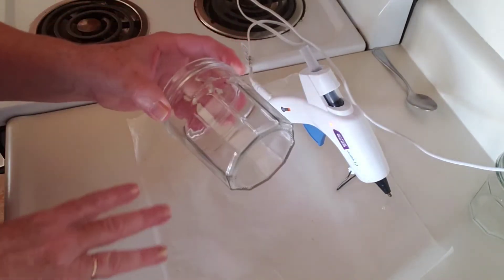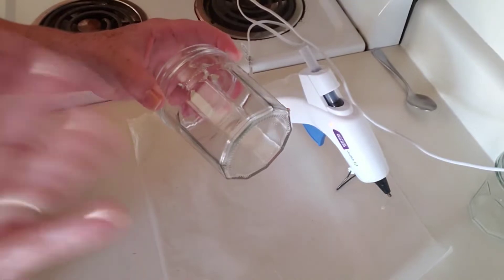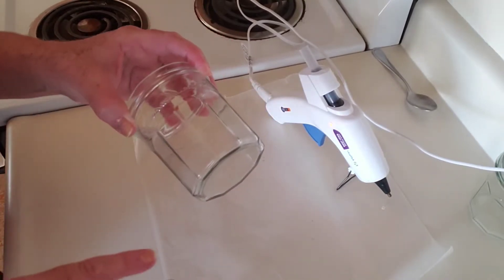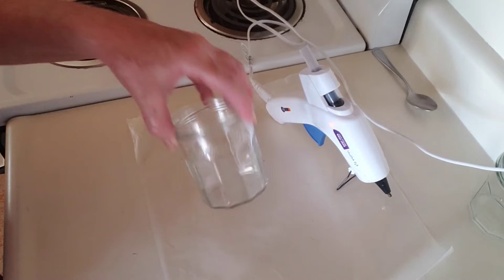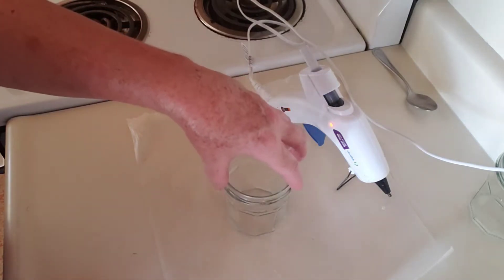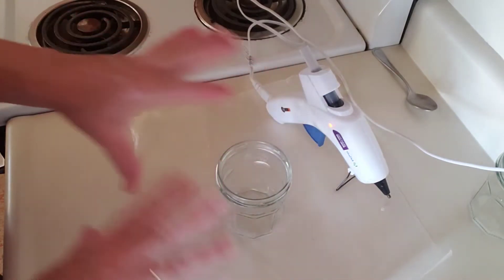So I've taken the label off, cleaned out the jar, and then I've wiped it down with rubbing alcohol to get any of the remaining glue off the jar or fingerprints.